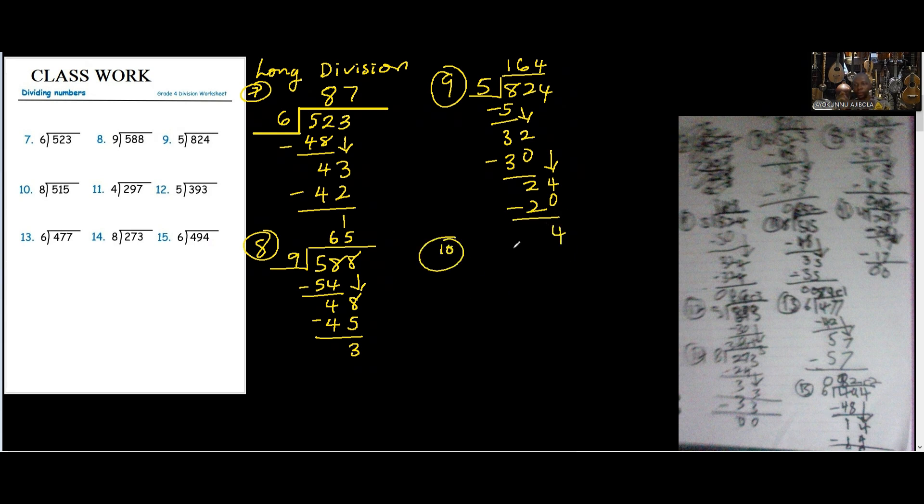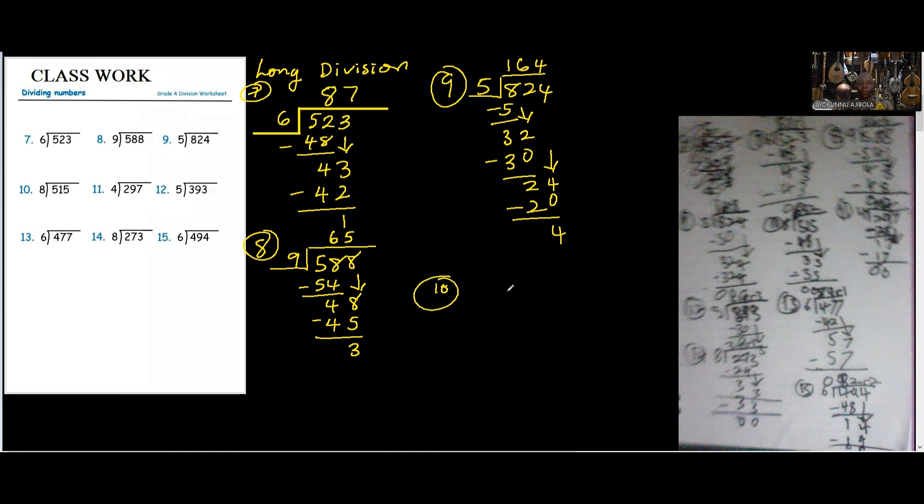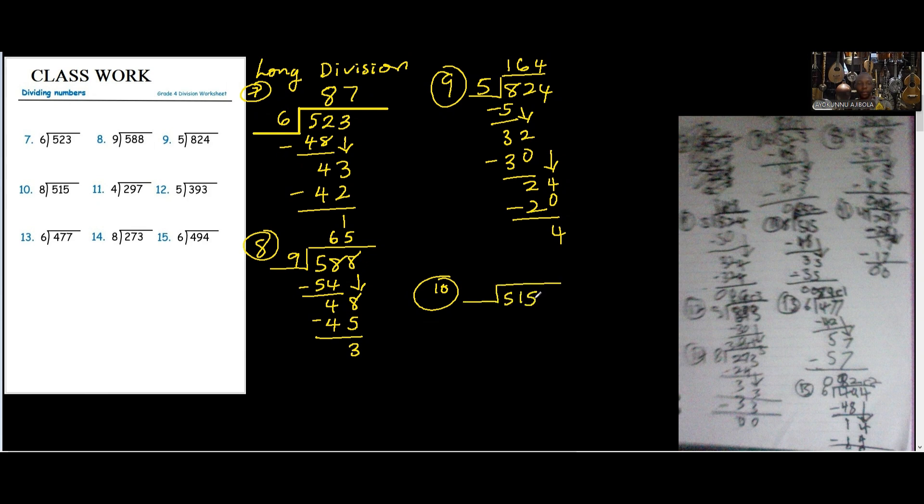And number 10. We have 5, 1, 5. Divided by... I mean this 10. That would be... So... 5, 1, 5. Divided by 8. 8 can go in 5. So 8 and 51 is 6. 6 times 8 is 48. So... What do you have left? 11 minus 8 is 3. And 4 minus 4 is 0. So... We have 35. 8 and 35 is 4. 8 times 4 is 32. Then we have remainder 3.